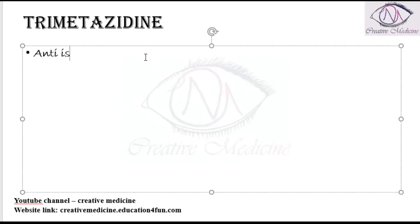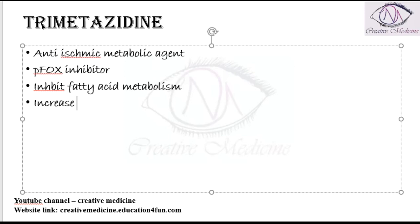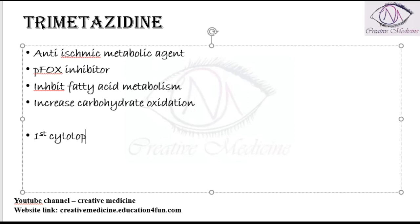Trimetazidine is an anti-ischemic metabolic agent. It is also a PFOX inhibitor — that is, a partial fatty acid oxidation inhibitor. As a result, it inhibits fatty acid metabolism and increases carbohydrate metabolism. Carbohydrate oxidation is increased by inhibiting the fatty acid metabolism. Trimetazidine is the first cytoprotective anti-ischemic agent which has been approved.